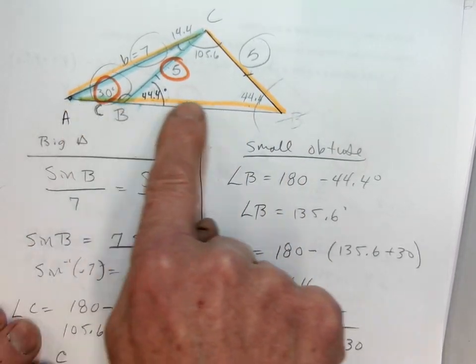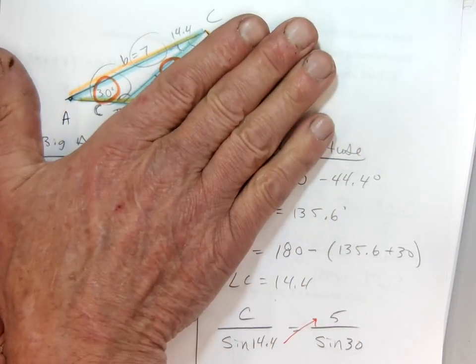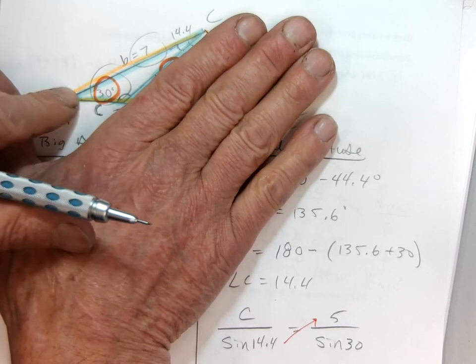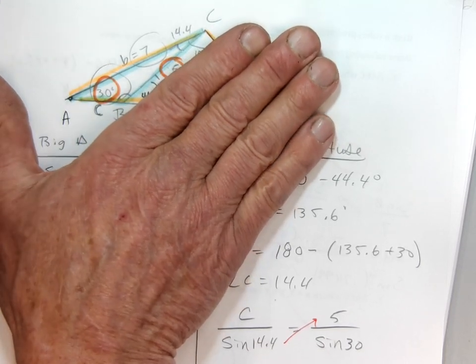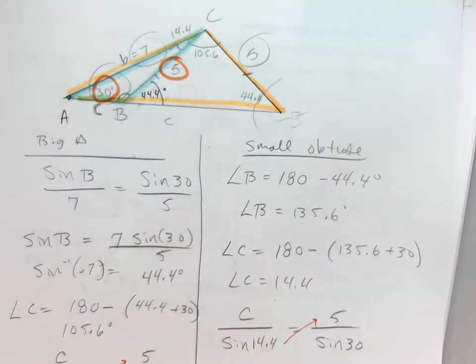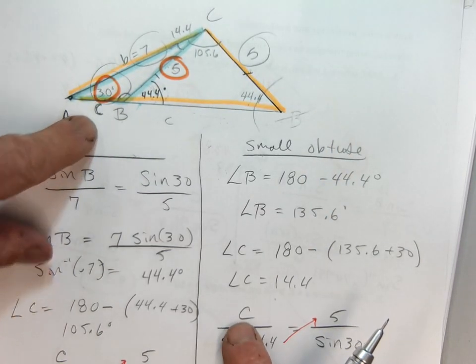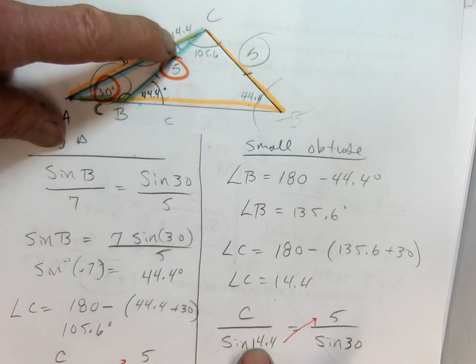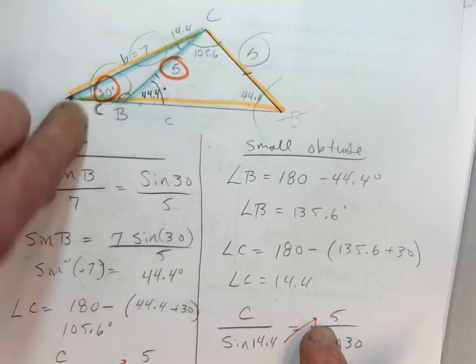Now, side C is no longer all the way across here because this triangle's not there. Side C is this little piece right here. But again, I have opposites. I have opposites here and opposites here. So I set up my opposites. My side C over the sine of 14.4 equals my 5 over sine of 30. Cross multiplied.